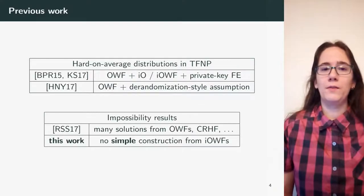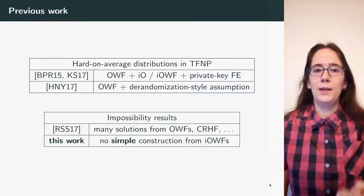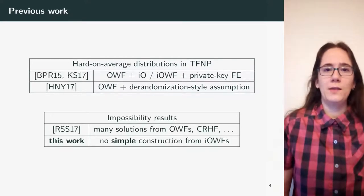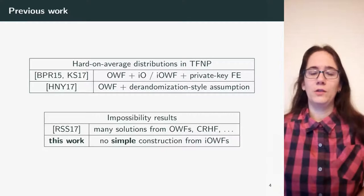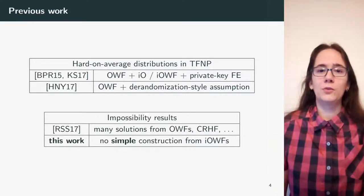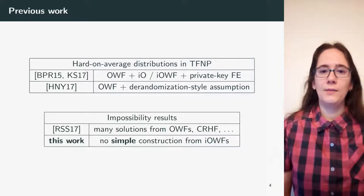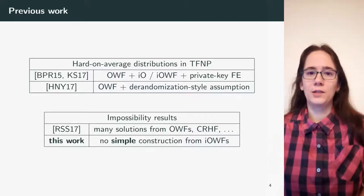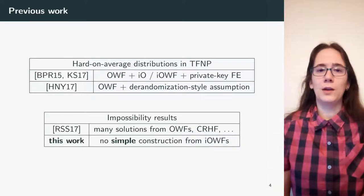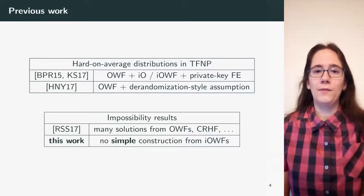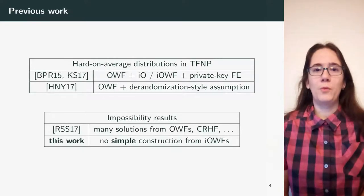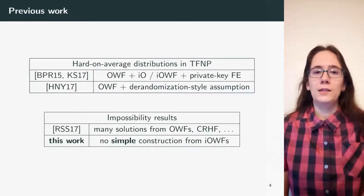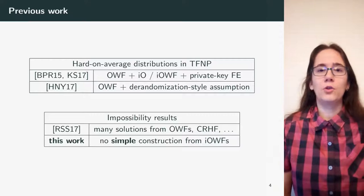Let me briefly go through the previous work. In 2015, Bitansky, Paneth, and Rosen constructed a hard-on-average distribution from one-way functions and indistinguishability obfuscation. Two years later, in 2017, Komargodsky and Segev came up with a construction from injective one-way functions and a private key functional encryption scheme. In the same year, Hubáček, Naor, and Yogev constructed a hard-on-average distribution from one-way functions and a randomization-style assumption. But all of these assume not only one-way functions but also some other assumption.